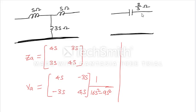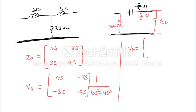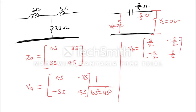So for this 2/s ohms, the admittance is s/2 mhos. Tell me Ya now. Here Yb is zero mhos — impedance is infinity means admittance is zero — so Yc is also zero. Tell me Ya: Ya is s/2, minus s/2, minus s/2, and s/2.